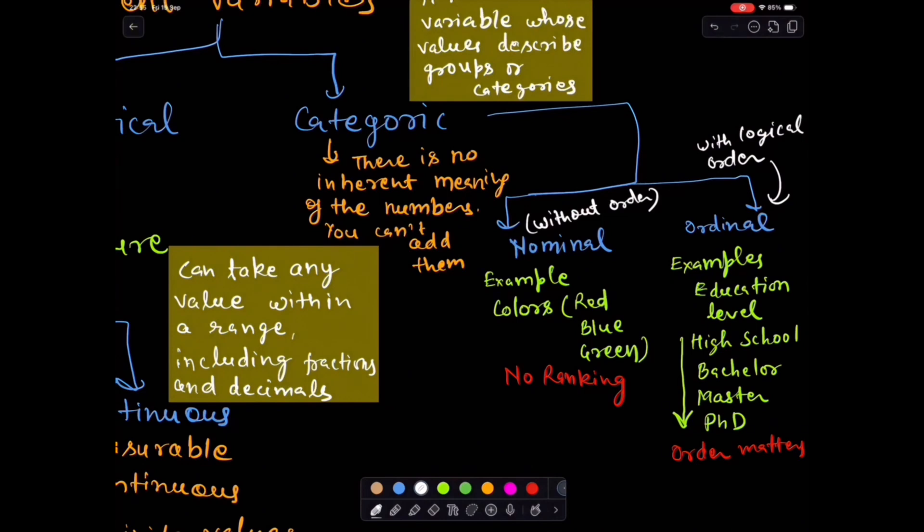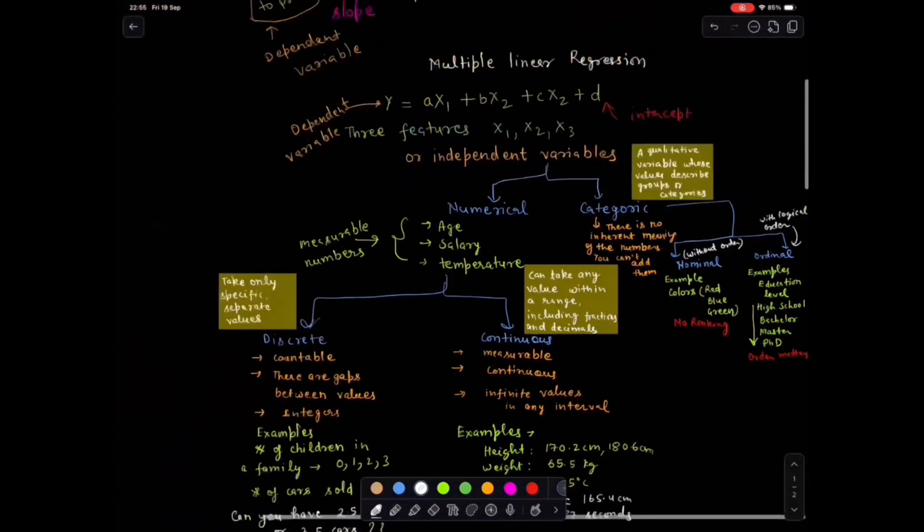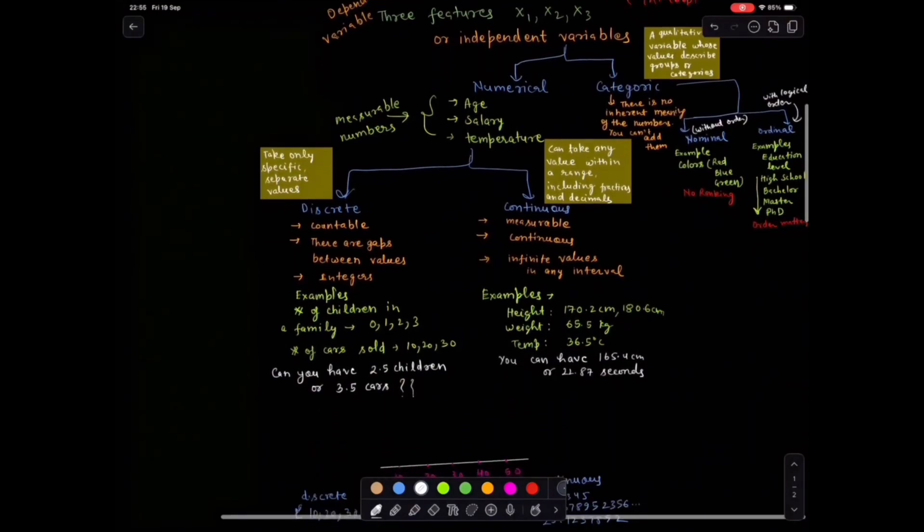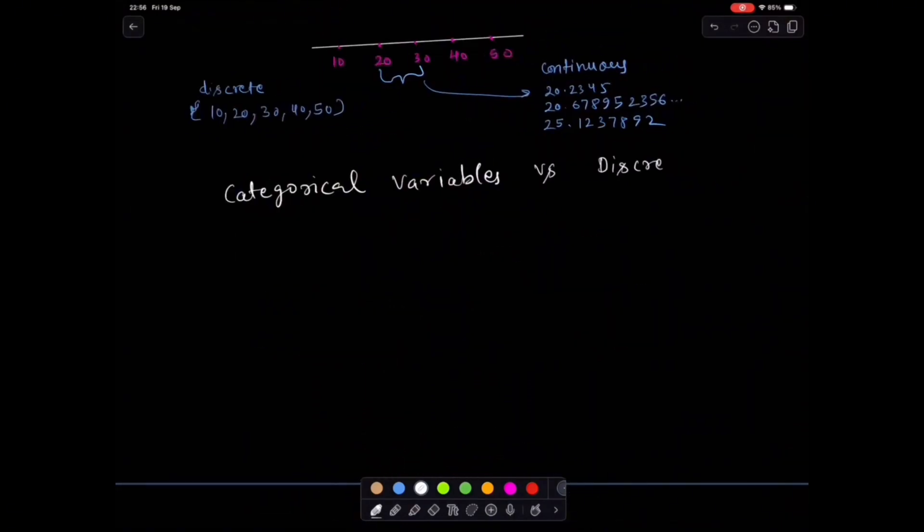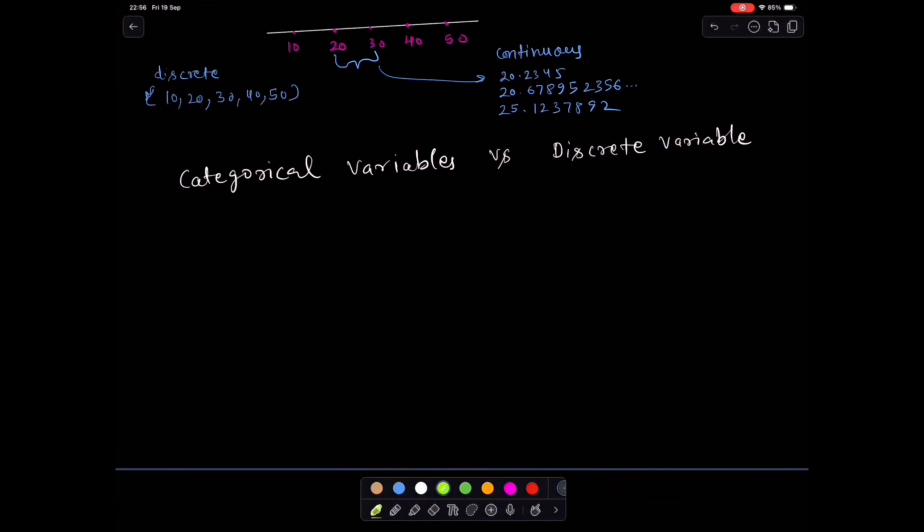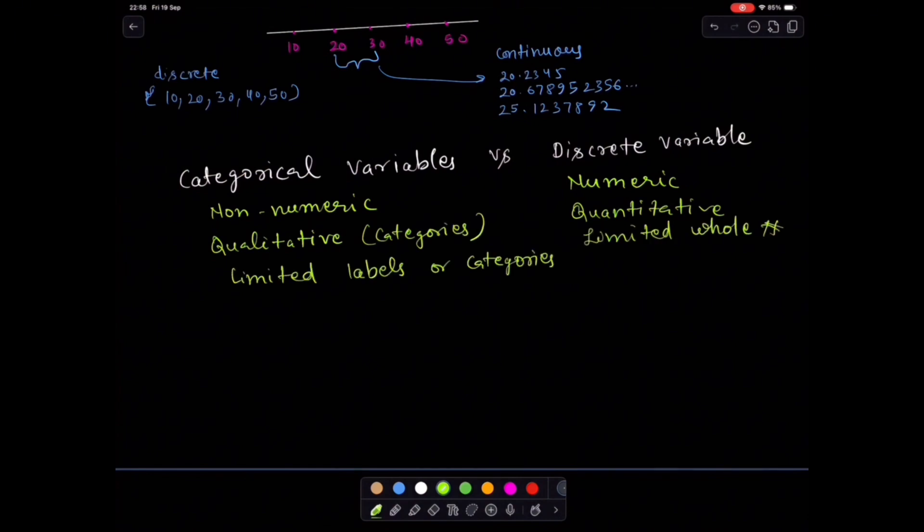Now, here is a common question. What is the difference between categorical and discrete? Quick answer: categorical is pure labels. Discrete looks numeric, but acts like counts. Think of it this way. Categorical: male, female, India, US. Discrete: three kids, two cars.